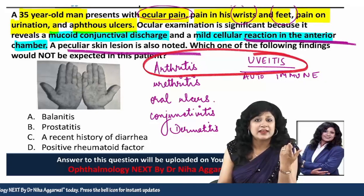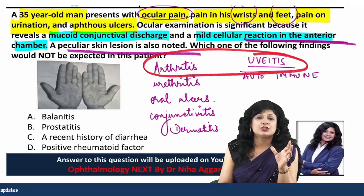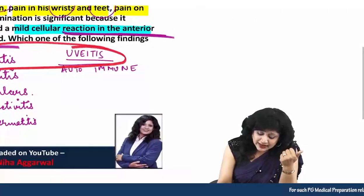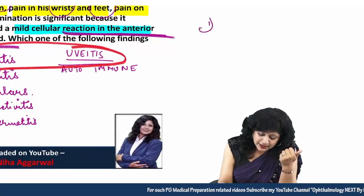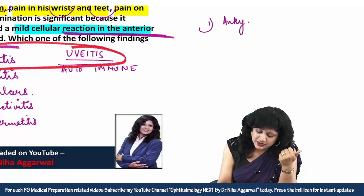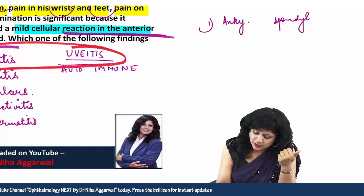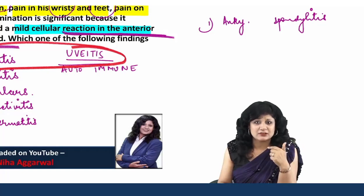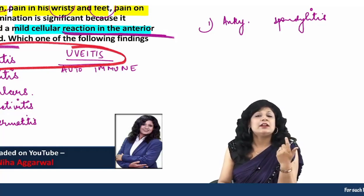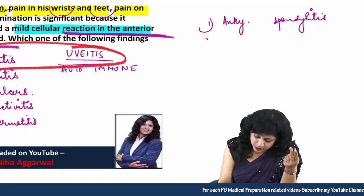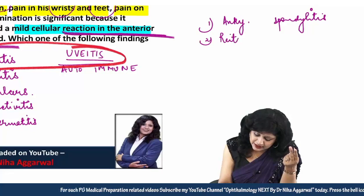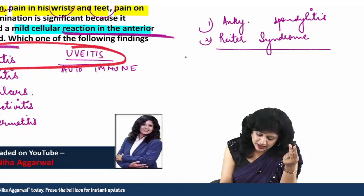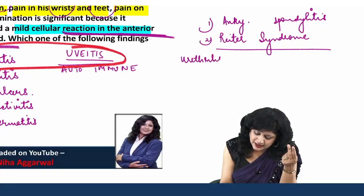Whenever we encounter uveitis along with arthritis, we think of spondyloarthropathies. Ankylosing spondylitis is one option, but ankylosing spondylitis would more likely show spine involvement and does not typically have conjunctivitis. So let us consider Reiter's syndrome.